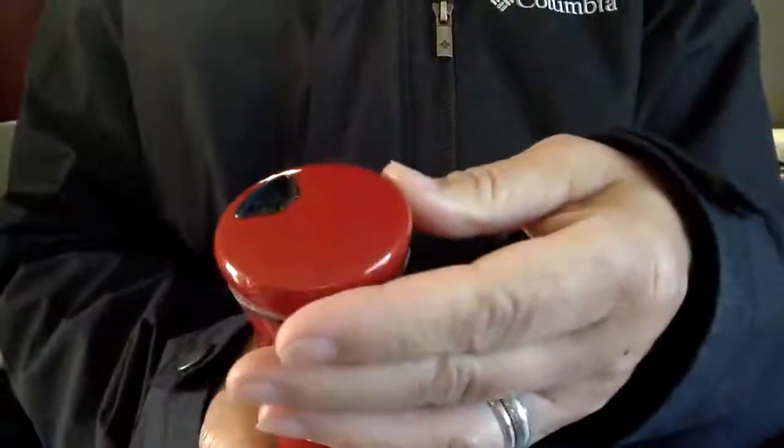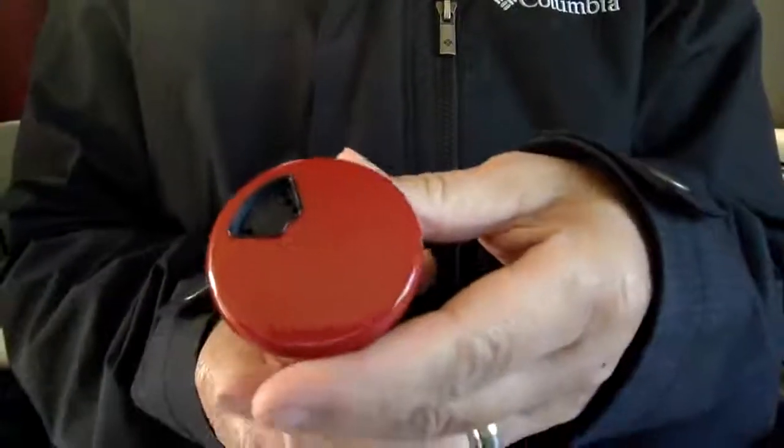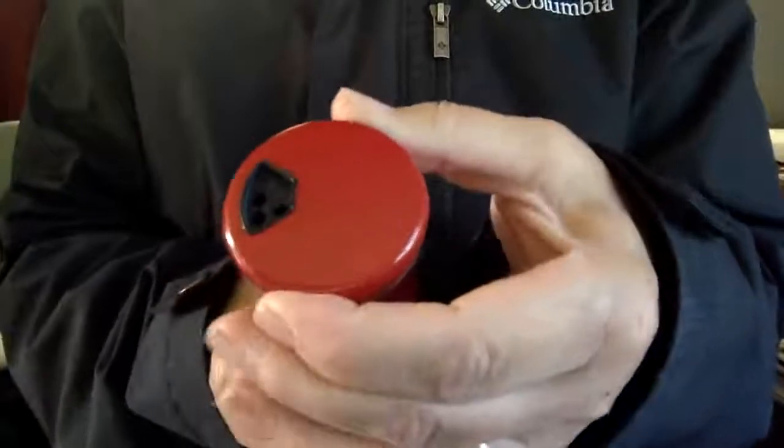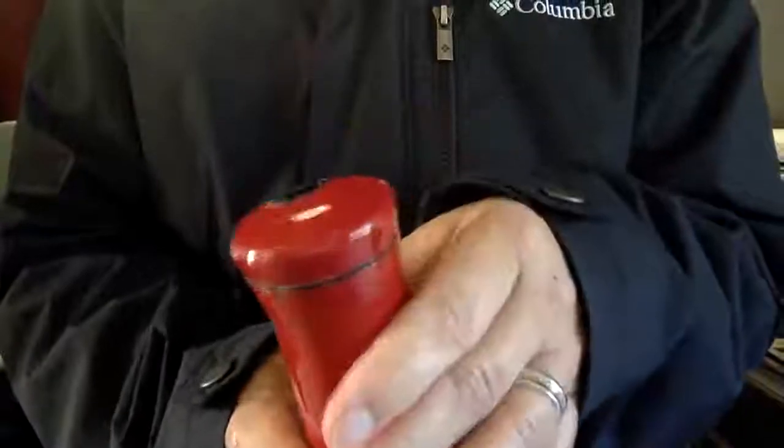Also, when you first get your shaker, if it feels a little bit tight, simply just doing this back and forth again can just kind of smooth out any of those rough edges and help.